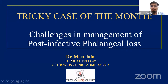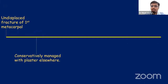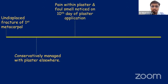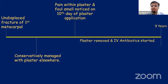This case: challenges in management of post-infective phalangeal loss. A nine-year-old girl suffered an undisplaced fracture of the first metacarpal, conservatively managed with plaster. On the 10th day, parents noticed foul smell from the plaster and had it removed. There was a raw area with discharging pus. IV antibiotics were started and she presented to us at age nine.